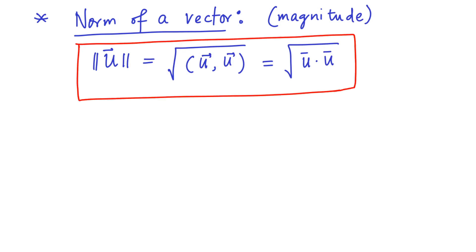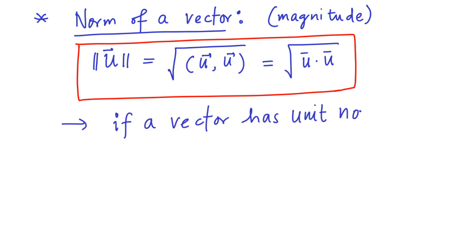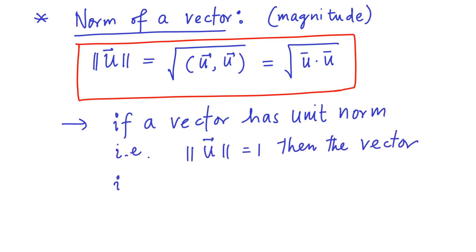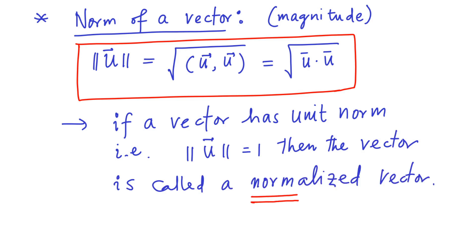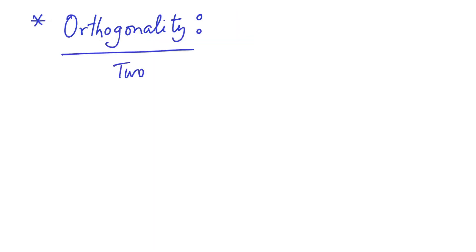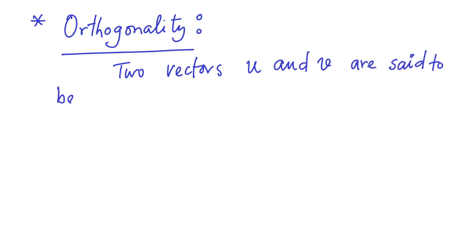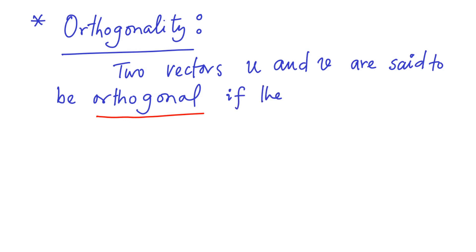Norm is always taken to be positive. If a vector has unit norm — that is, norm of u equals 1 — then the vector is called a normalized vector. Next we define the concept of orthogonality.